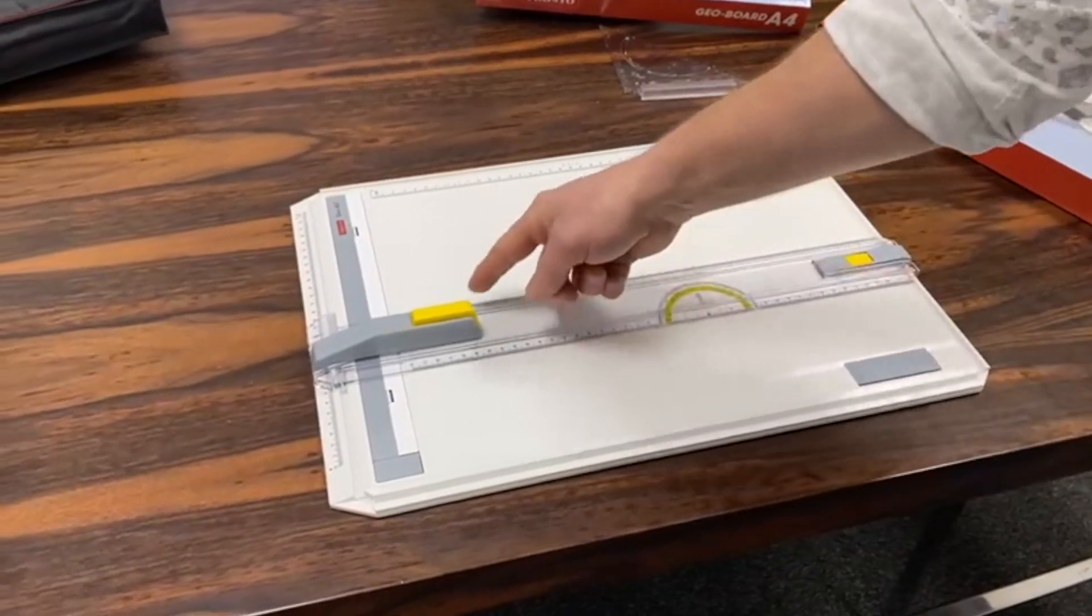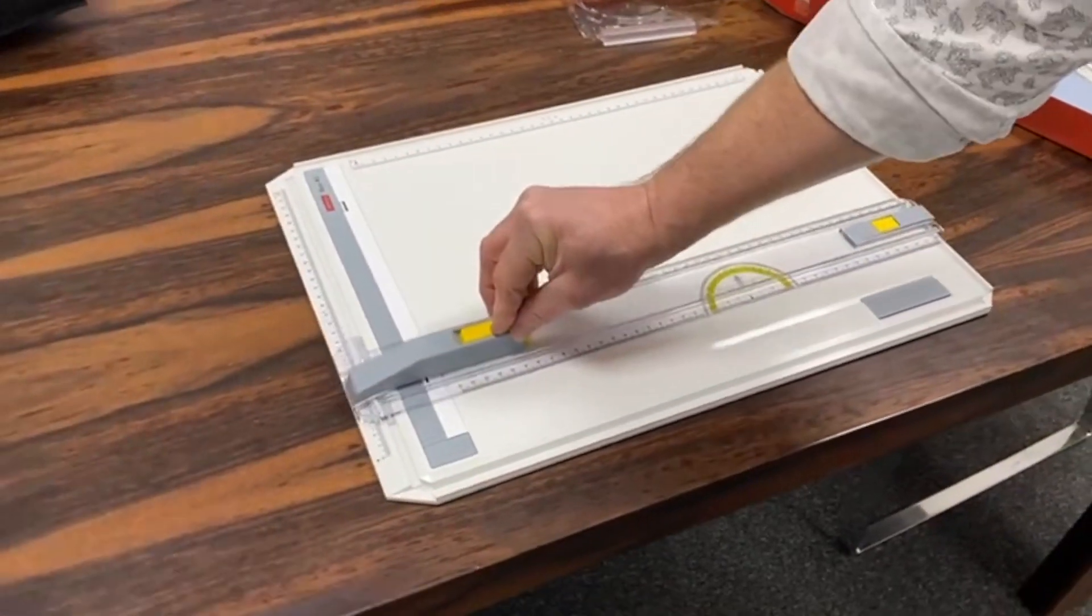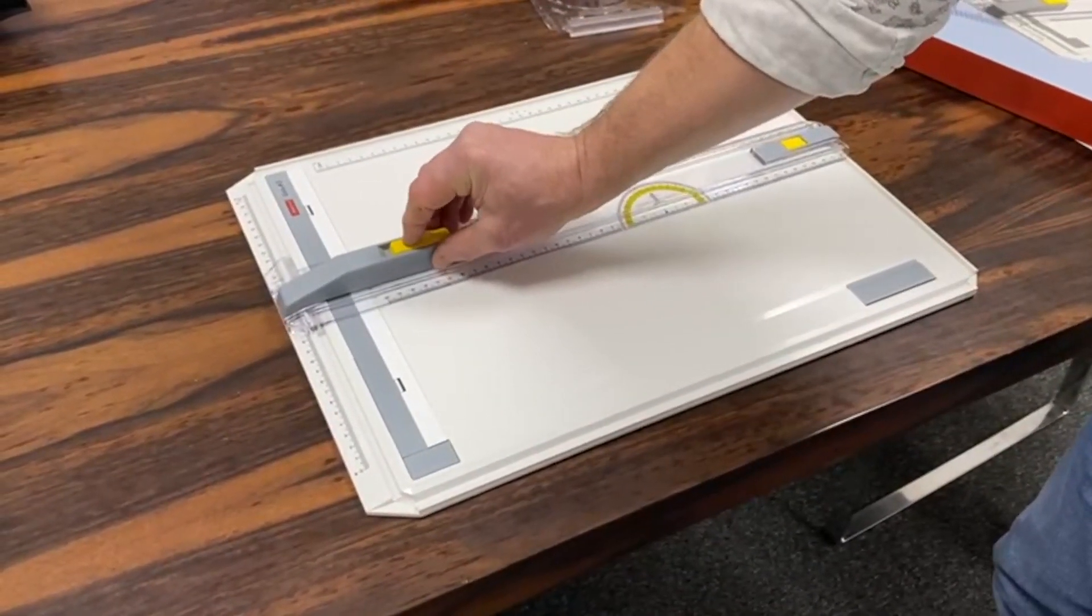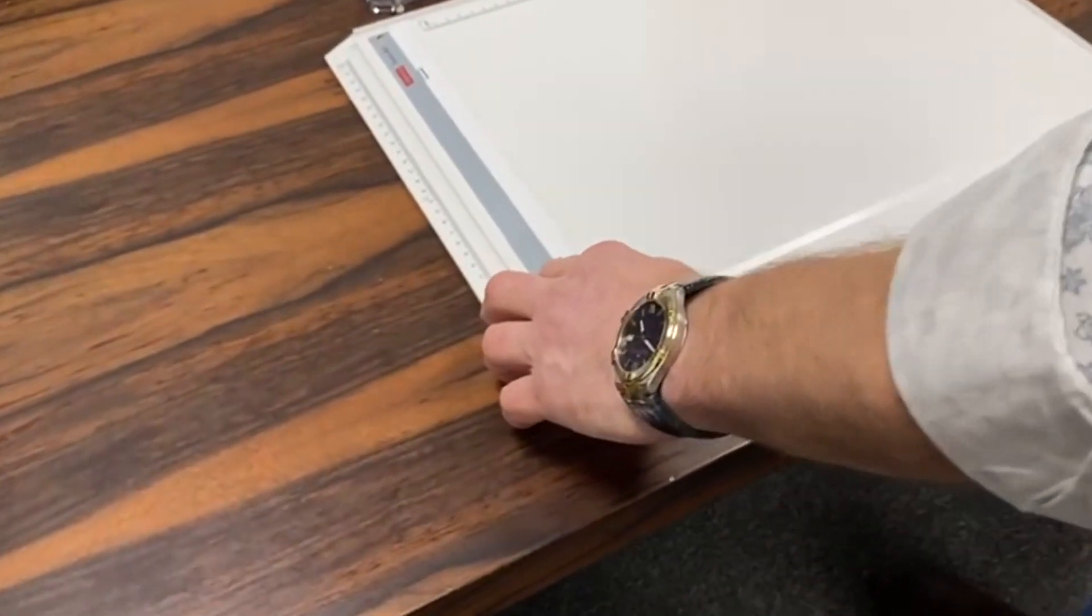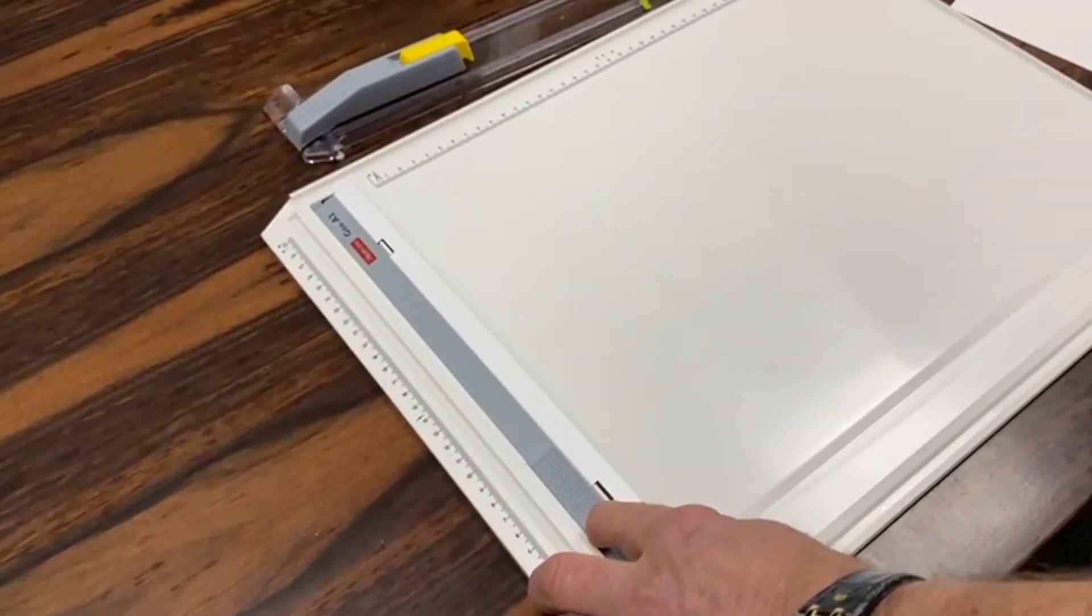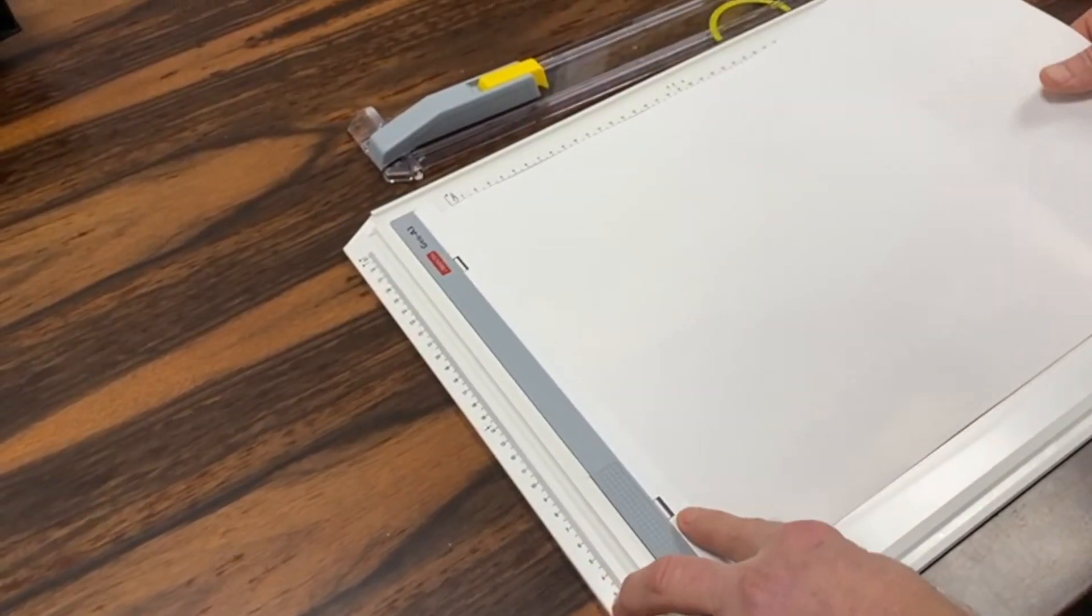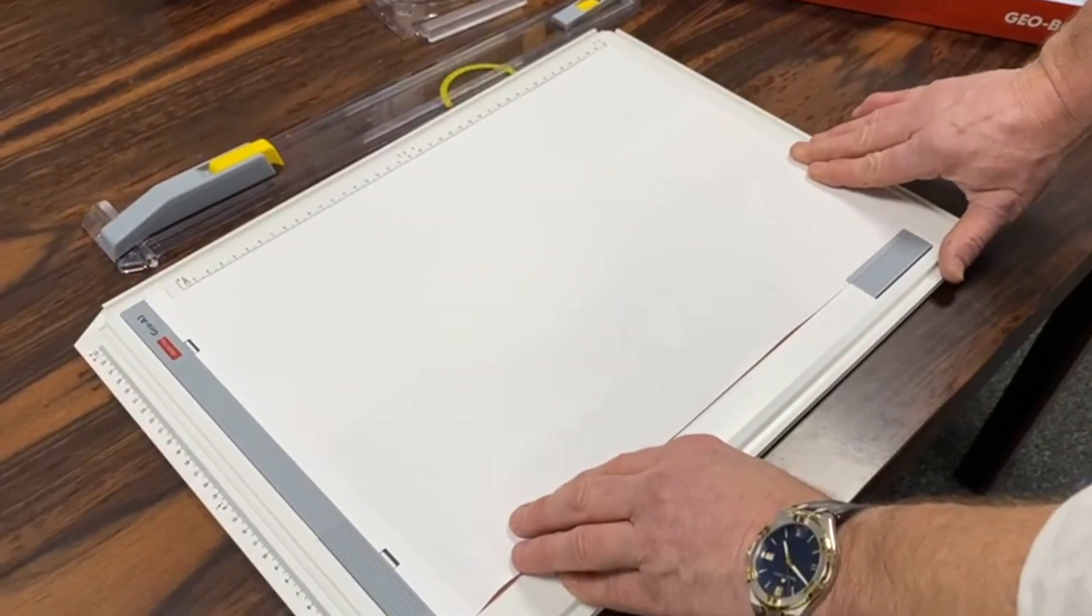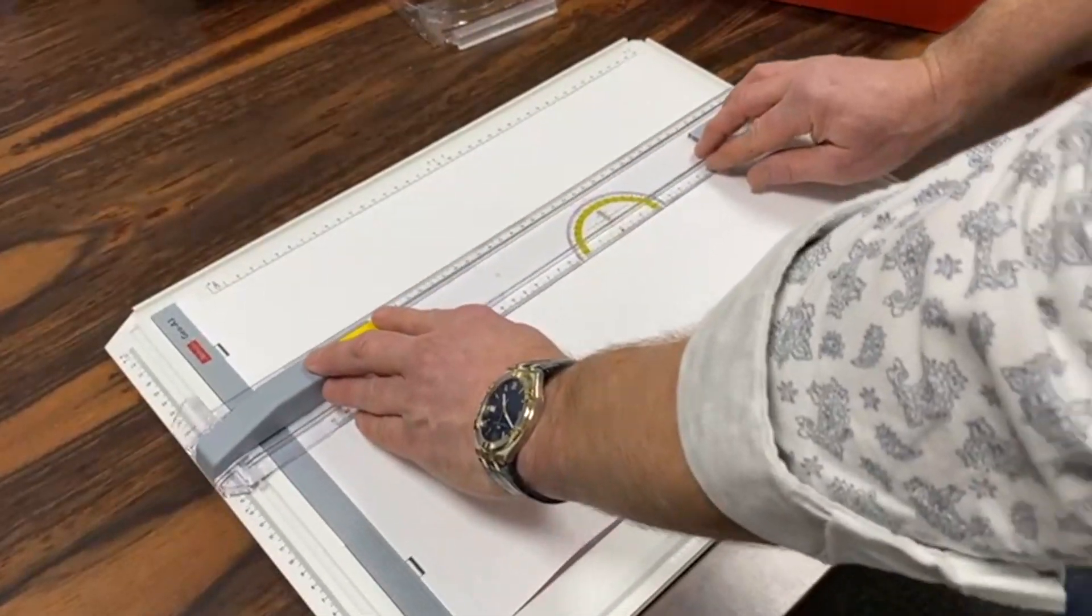It comes with two scales, on the top and bottom, so you can use the full height of the board. Another great feature is the magnetic clamp - you can put your paper in place and it clamps down. You can also clamp it at the bottom, keeping it nice and steady while you're working on your drawing.